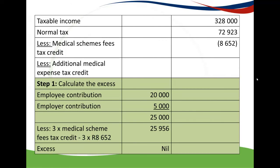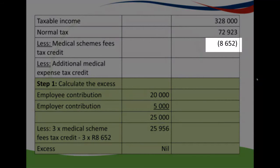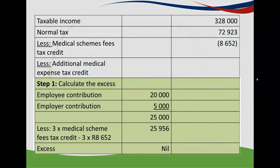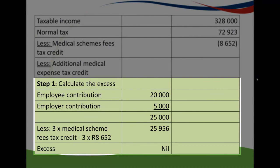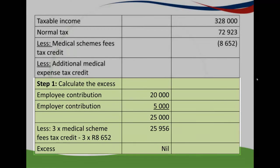Let's calculate: take the employee contribution of 20,000 Rand plus the employer's contribution of 5,000 Rand, then deduct 3 times the medical schemes fees tax credit of 8,652 Rand calculated in Part A. You will see the excess comes to zero. The reason is that the excess can never be negative — because 3 times the medical schemes fees tax credit is greater than the total contributions, the excess is zero.